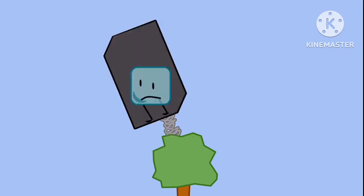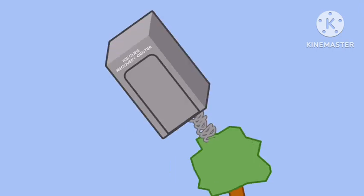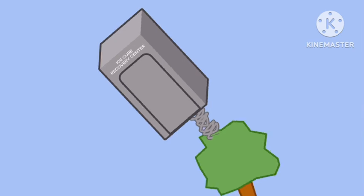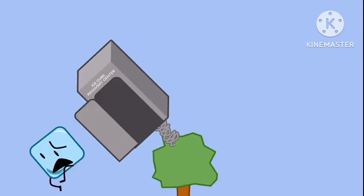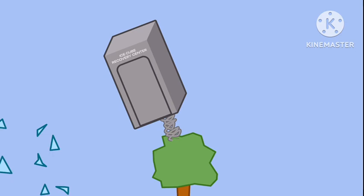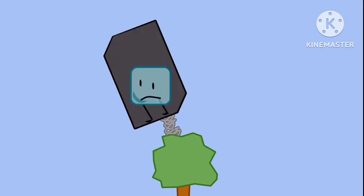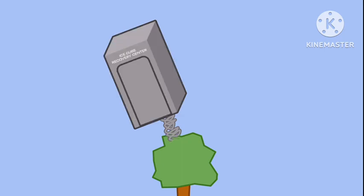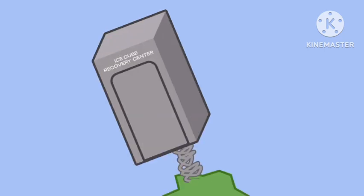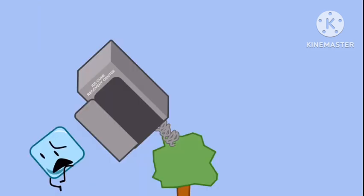Ice cube is recreated in the ice cube recovery center. She'll weigh it down, and the ice cube recovery center will tilt down off the cliff, and ice cube will fall out and crash at the bottom of the cliff. And ice cube is recreated in the ice cube recovery center. She'll weigh it down, and the ice cube recovery center will tilt down off the cliff. Cycle repeats.